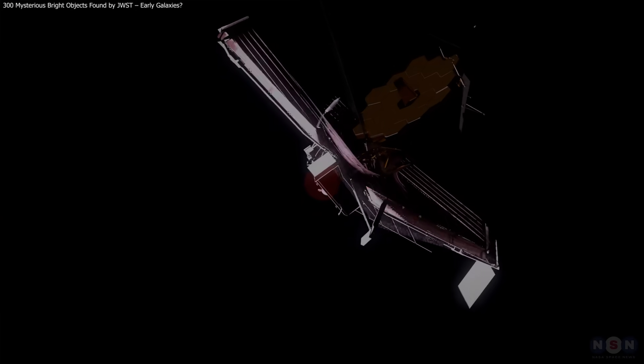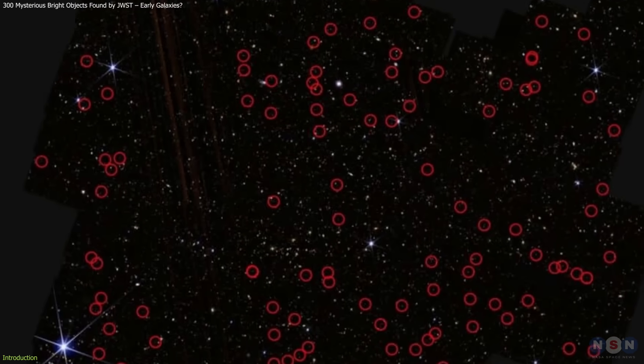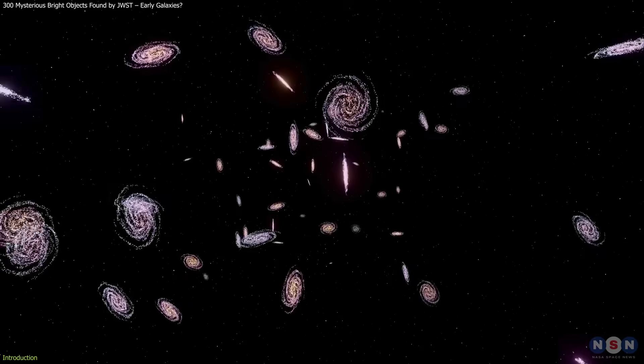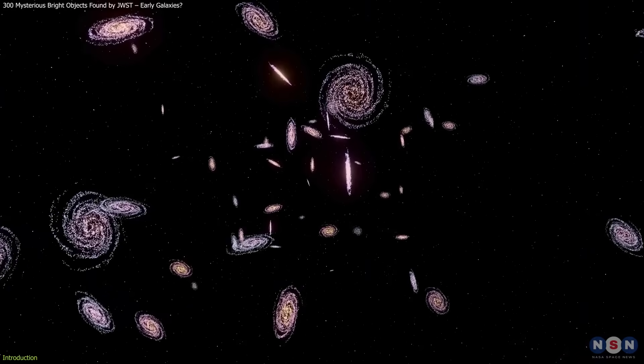Astronomers using JWST have spotted 300 unusually bright objects, some possibly galaxies from the universe's earliest era.